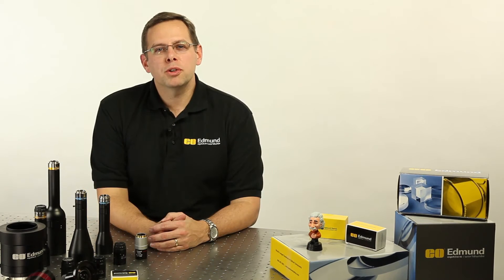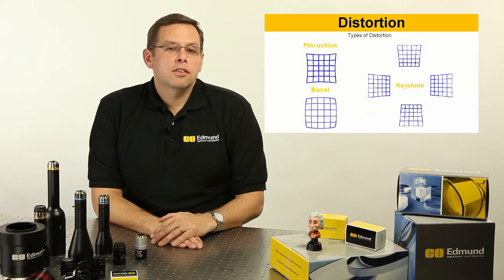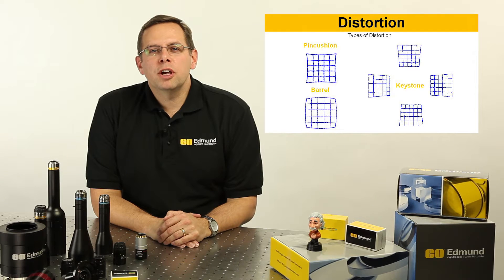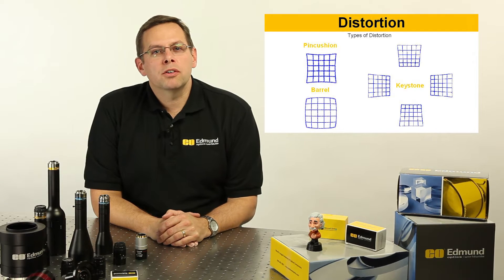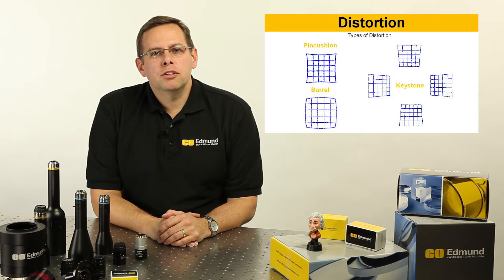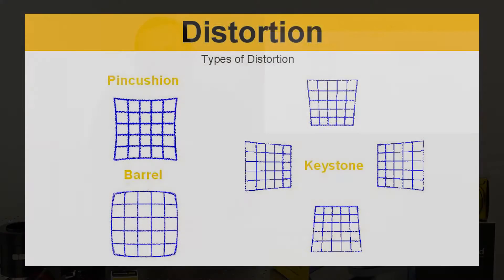Let's look at three common distortion types. In the slide shown, you're going to see a couple of different types of distortion that we're going to talk about today. There is barrel, pincushion, and keystoning specifically that we're going to discuss.